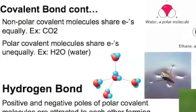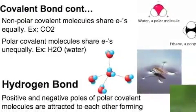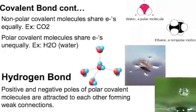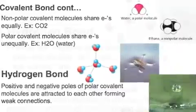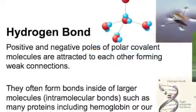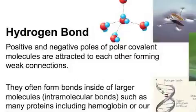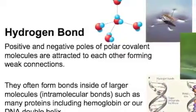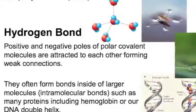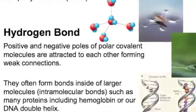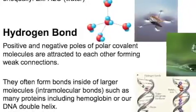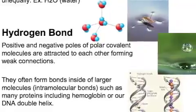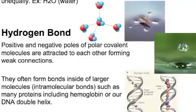And then that unequal sharing creates a little bit more positivity and a little bit more negativity on different poles, and that will create its own type of bond, and that's known as a hydrogen bond. So positive and negative poles of a polar covalent molecule are attracted to each other, forming weak connections. These are bonds that often form inside larger molecules. They're called intramolecular bonds. So they're in such as in proteins, we have such bonds that help form the shape of a protein.